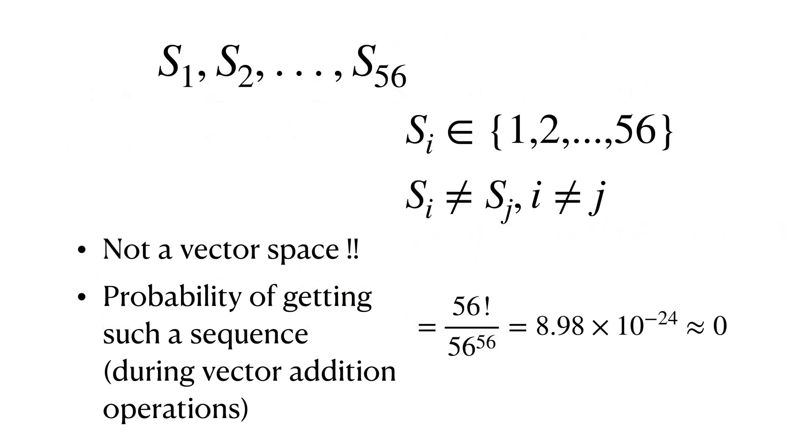But the sequence of students we will be using does not form a vector space because the same student cannot be assigned two rooms. Hence using this domain for PSO will be a nightmare where vector additions are performed frequently and the probability of getting a valid sequence is almost nil.